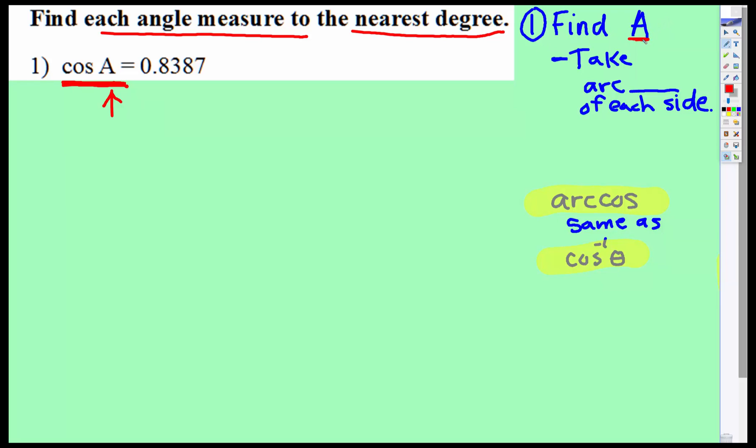To find A, take the arc of each side. Arc cosine means the same thing as the inverse of cosine. I'll show you what that looks like on a calculator.